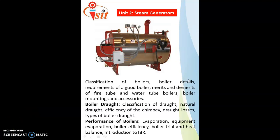The second unit deals with steam generators. As we know, the steam power plant works on the Rankine cycle. The heart of that Rankine cycle or steam power plant is the steam boiler, which is nothing but the steam generator. In this unit, it includes classification of boilers, boiler details, requirements of a good boiler, advantages and disadvantages of fire tube and water tube boilers, and boiler mountings and accessories.